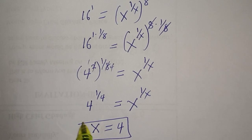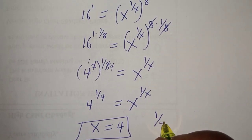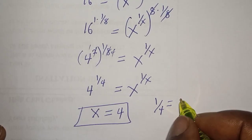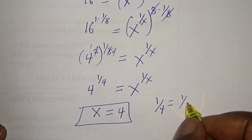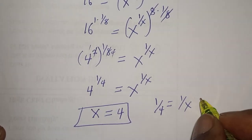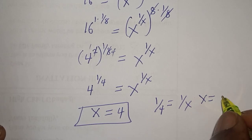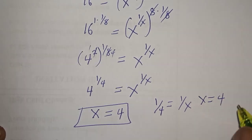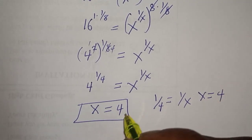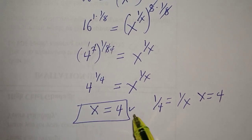And if you compare the exponent, 1 over 4 is equal to 1 over s. Now, if you cross multiply, s is equal to 4. Therefore, our final answer is s is equal to 4.